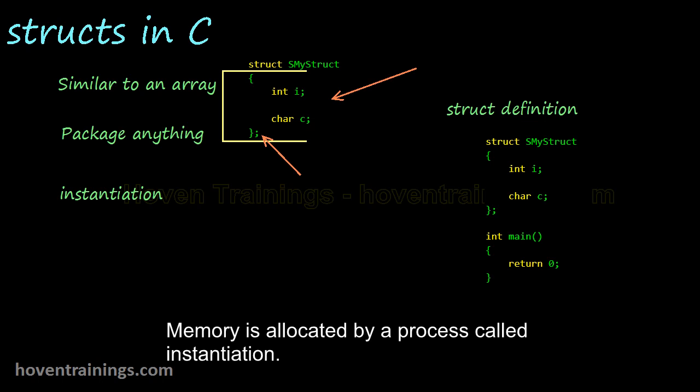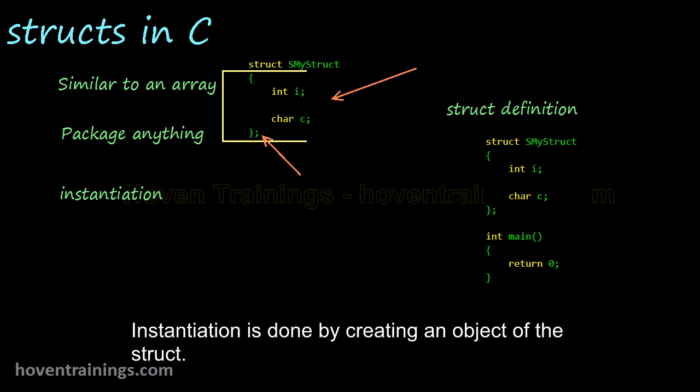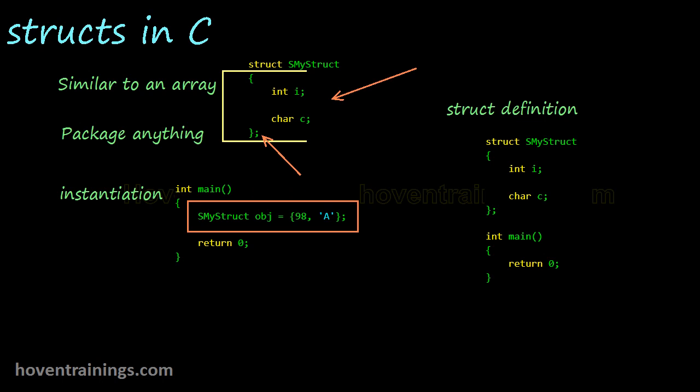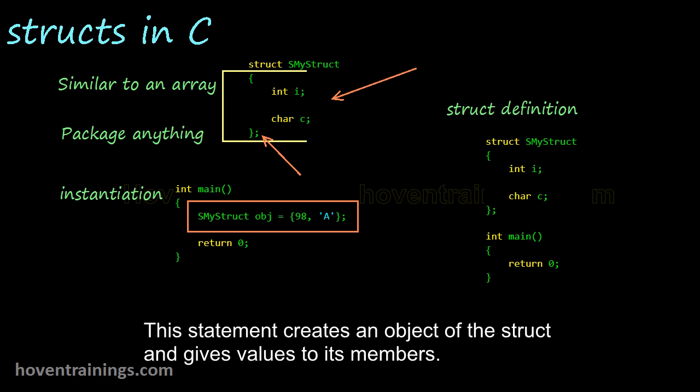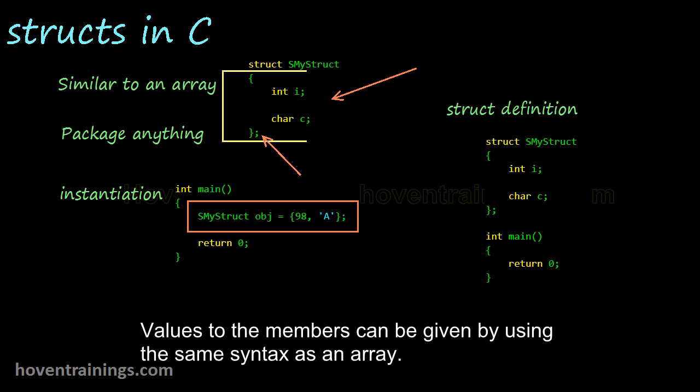Memory in the struct is allocated by a process called instantiation. Instantiation is done by creating an object of the struct. This statement creates an object of the struct and gives values to its members. Values to the members can be given by using the same syntax as an array.